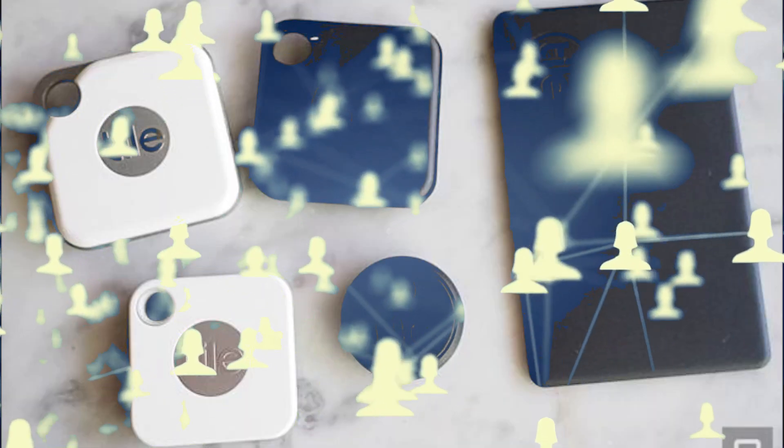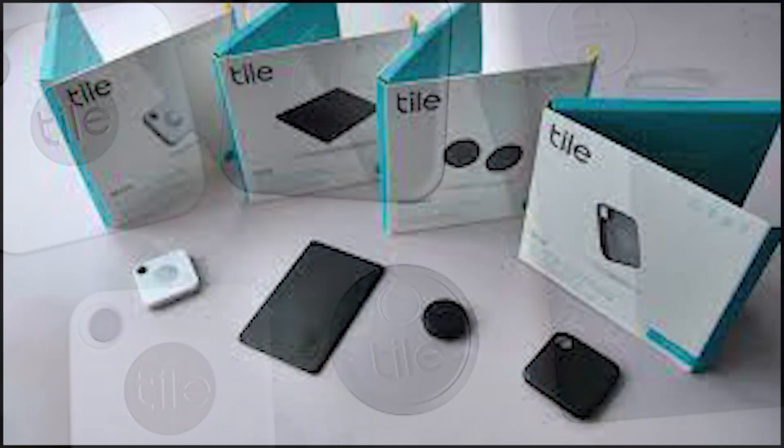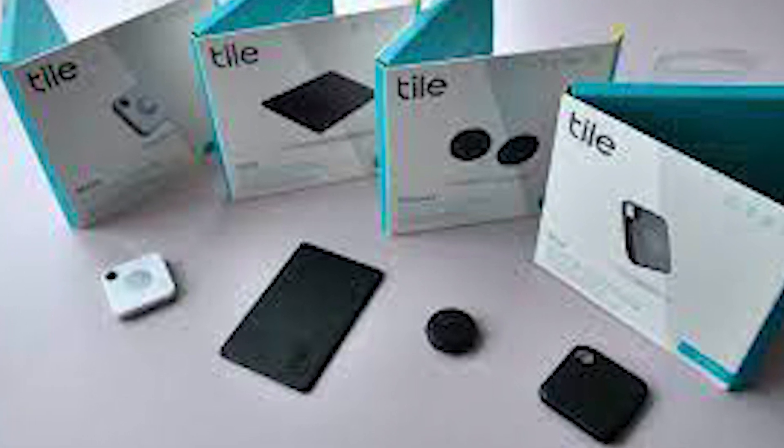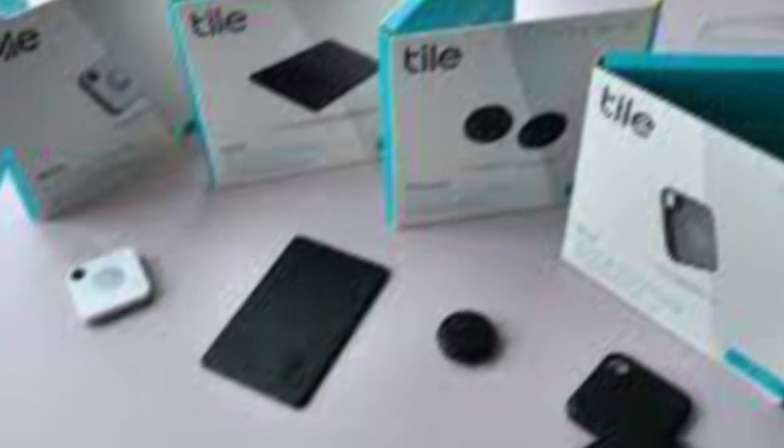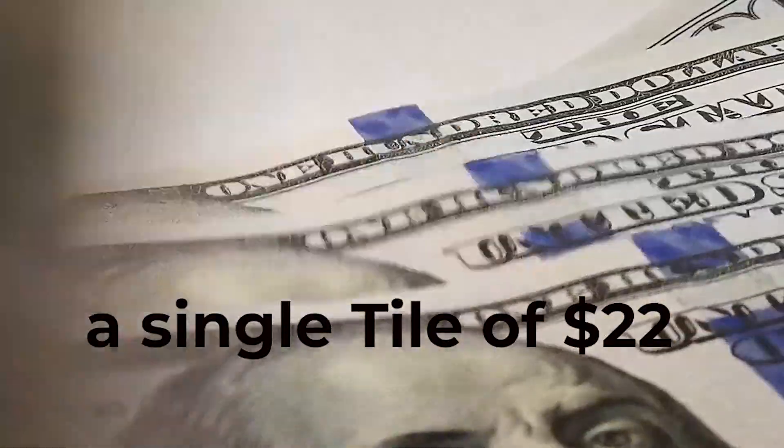You can still locate items nearby without the app by remotely activating the Tile's vibration, flash, or ring functions. This 4-pack of TileMate trackers from Amazon is available for around $60 with free shipping, compared to the average cost of a single Tile of $22.